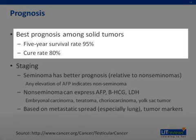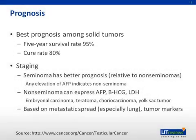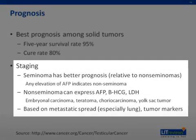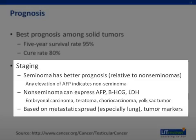Testicular cancer has the best prognosis among solid tumors. The five-year survival rate is approximately 95%, and the long-term cure rate is 80%. Both pathologic and radiographic evaluation for staging are important. Seminoma has a better prognosis relative to non-seminoma pathology. Non-seminomas are characterized by four distinct pathologic types — often with overlap — including embryonal carcinoma, teratoma, choriocarcinoma, and yolk sac tumor. Non-seminomas and seminomas can be present within the same specimen, and prognosis is determined by the most aggressive pathology present. Any elevation of alpha-fetoprotein indicates a non-seminoma pathology.